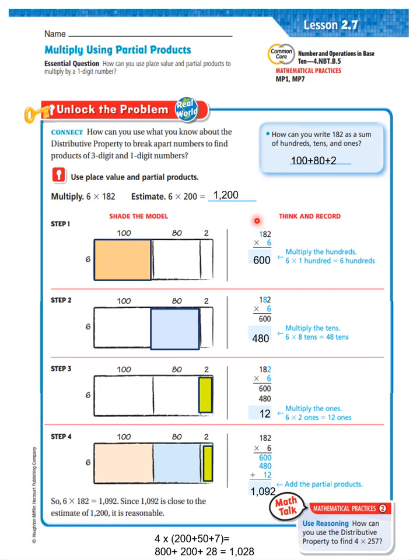6 times 100 is 600. Now, it says 6 times 80. Look at the 8 in the tens place. 6 times 80 is 480. So, it would be 600, 480. Now, it says 6 times 2.